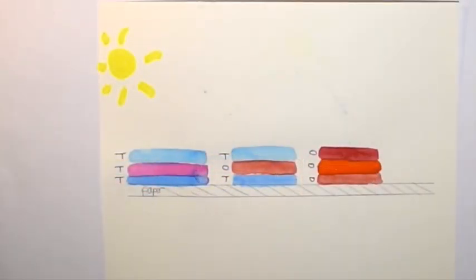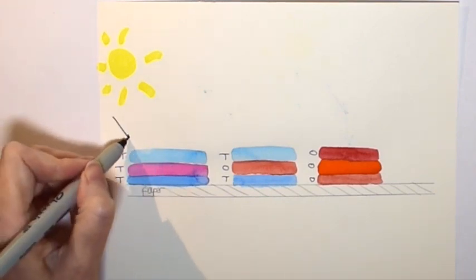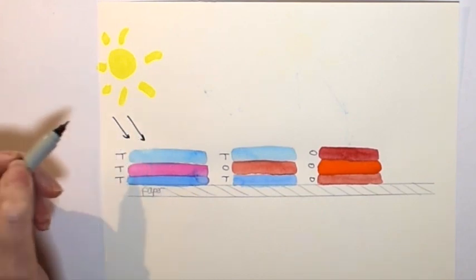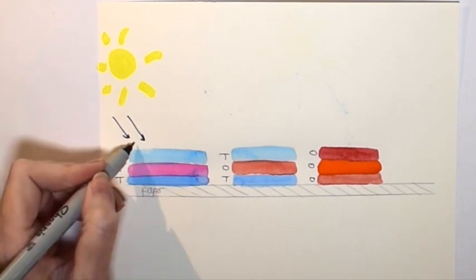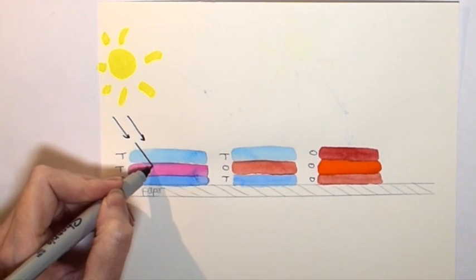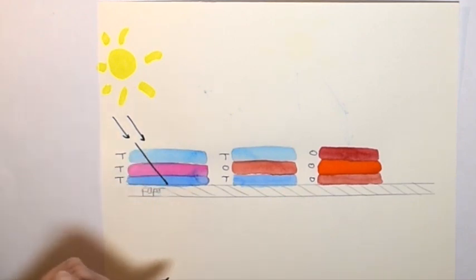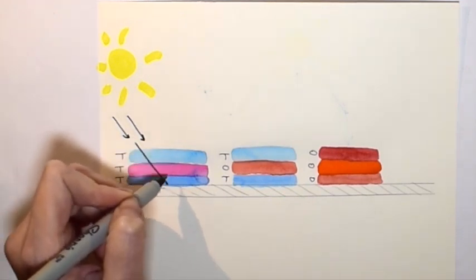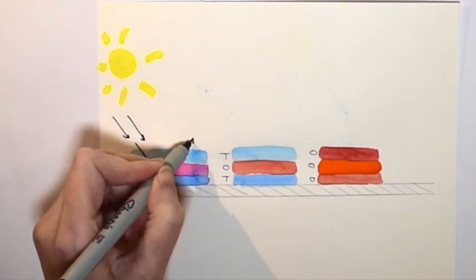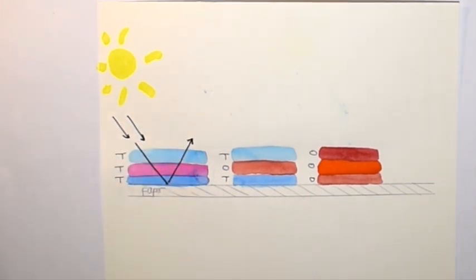Let's have a look at what happens to the light in these three scenarios. In the first case, the light is coming down and it can go right through the layers of paint because the three of them are transparent. Then it hits the paper and shines back through the layers of paint.